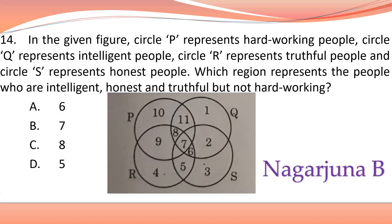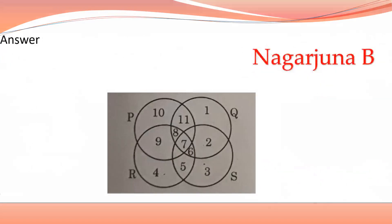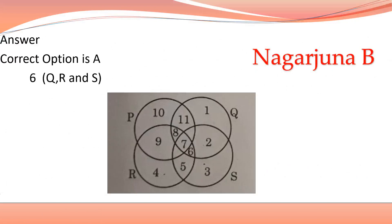Another Venn diagram is given in this particular question and we need to find the answer. According to the Venn diagram, if you observe, the answer is option A, that is 6, Q, R, and S. You can check — 6 is the only number which will be consisting of Q, R, and S.